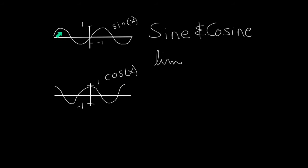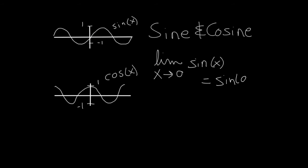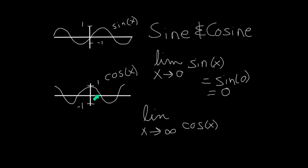Let's review the graphs of sine and cosine. These are oscillatory functions ranging from a height of negative one to positive one. The sine function starts at zero and increases immediately, then oscillates. The cosine function starts at one, begins to decrease, then continues to oscillate. For the limit as x goes to zero of sine, since sine is continuous at x equals zero, we just plug in: sine of zero equals zero. The limit as x goes to infinity of cosine does not exist — it continues to oscillate infinitely.